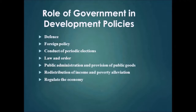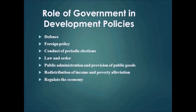Redistribution of income and poverty alleviation: governments collect various taxes to finance activities. Taxes are collected such that higher-income people contribute more tax revenue than the poor. Governments also spend money so that the poor are given basic necessities like food, shelter, clothing, education, healthcare, and monthly income. Pure income redistribution policies generate less future growth than policies that expand economic opportunity, but they reduce poverty immediately.